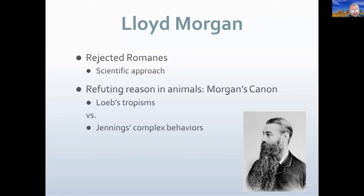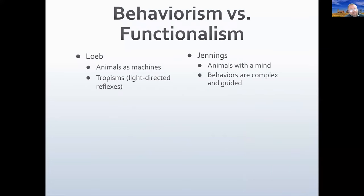This leads to a debate within biology more than psychology, between two animal biologists: Loeb and Jennings. Loeb maintained that we never need to climb the metaphorical ladder of Morgan's Canon — we can always stay at the bottom and use a stimulus-response explanation. Jennings, on the other hand, argued that we do sometimes need to climb the ladder and invoke more mental or psychological processes to explain behavior.